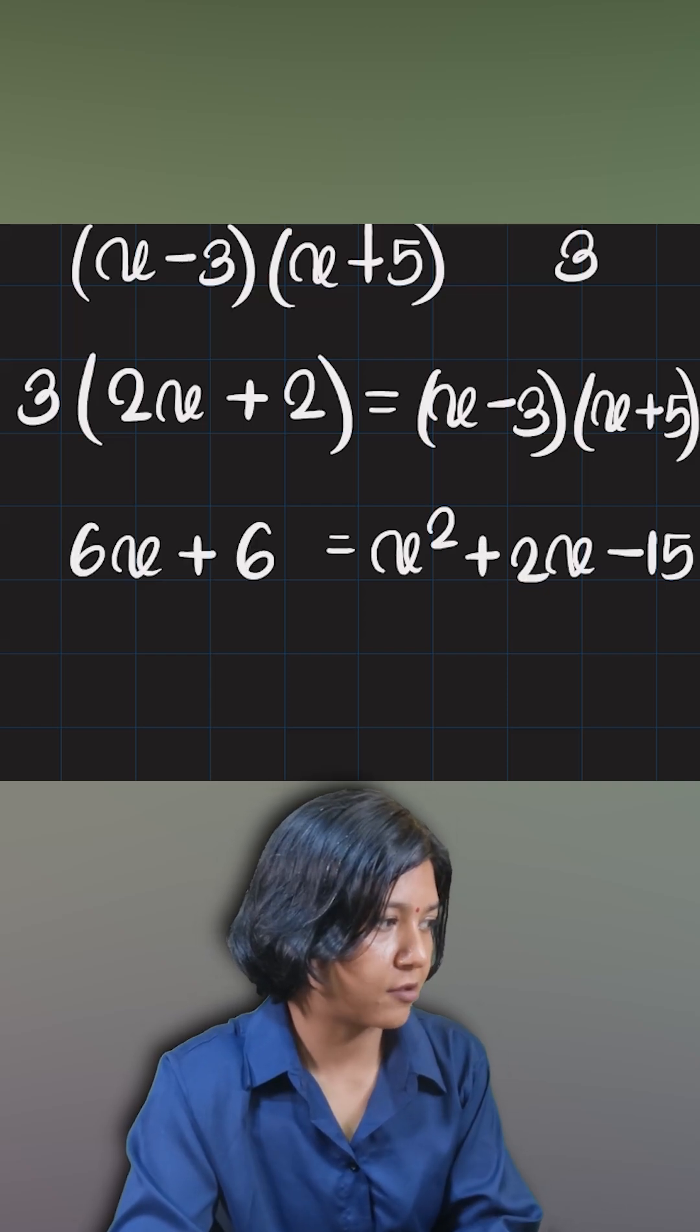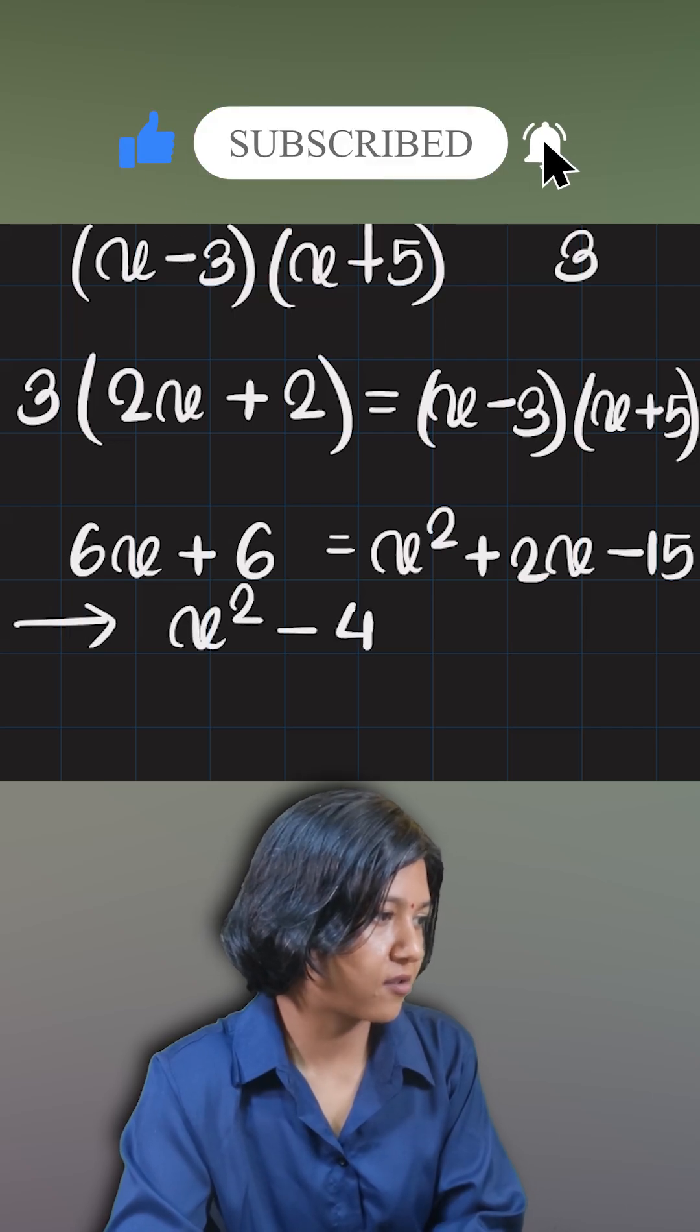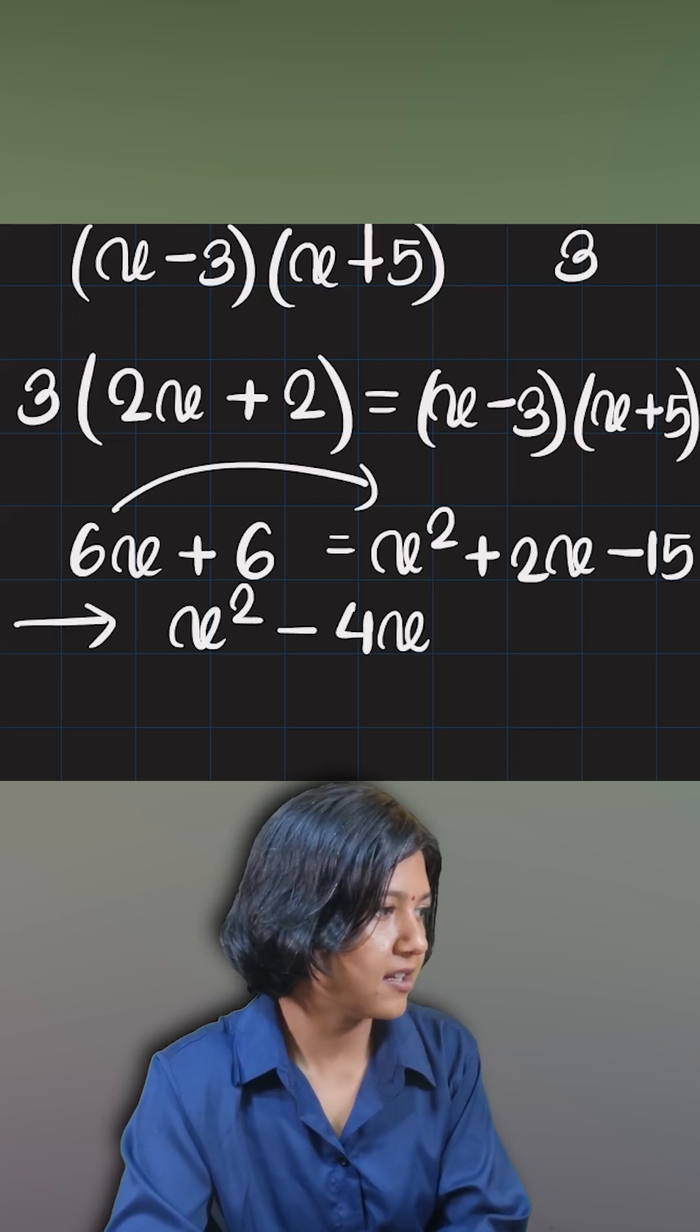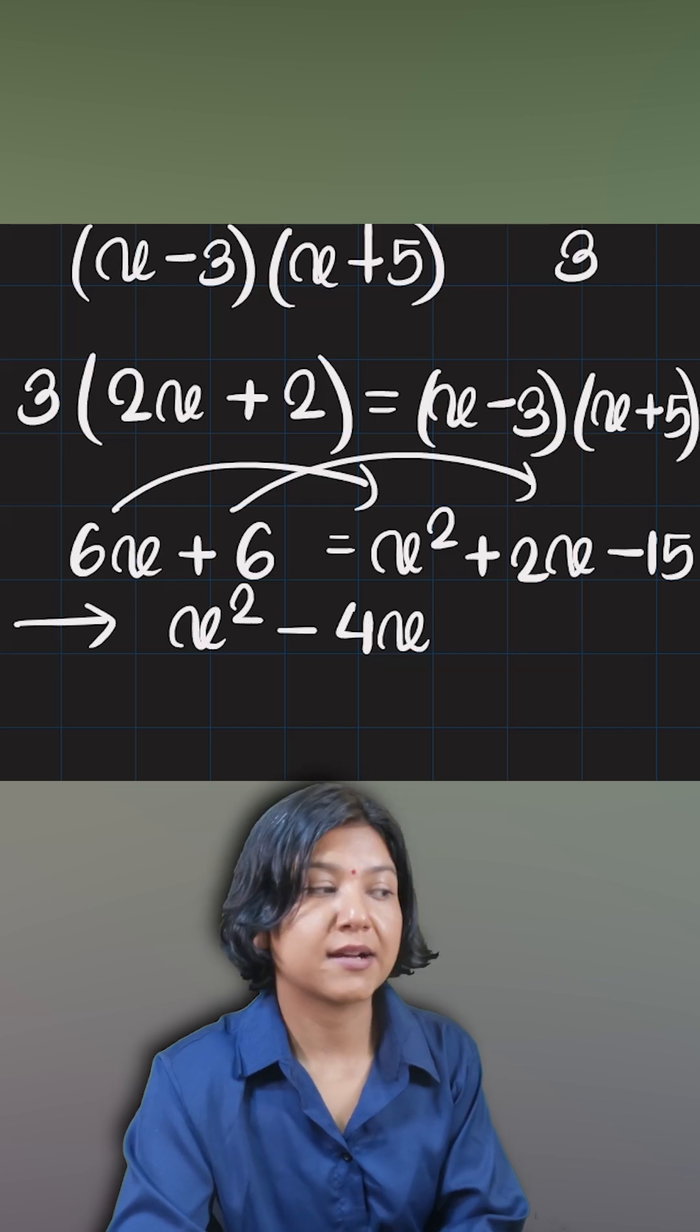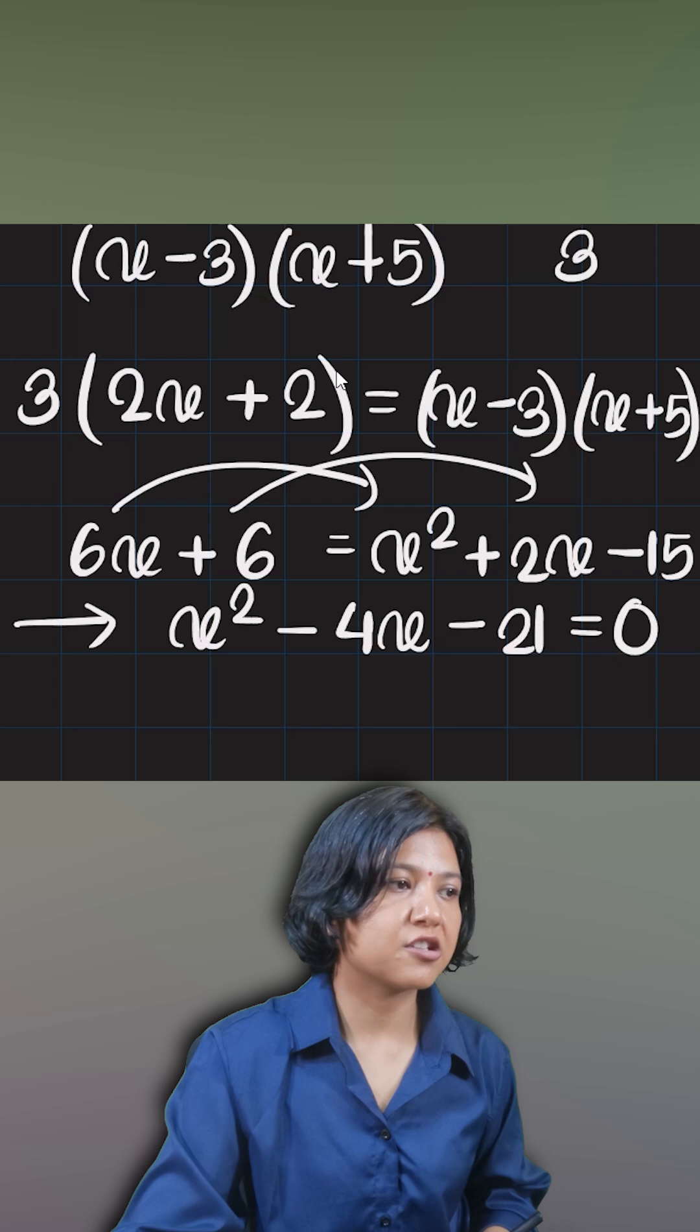Now what do you have? You can bring all the terms at one side and you get a perfect quadratic: x squared plus two x minus six x is minus four x. I'm sending this other side, plus six when sent to the other side becomes minus six. Minus fifteen minus six is minus twenty one equals to zero.